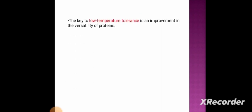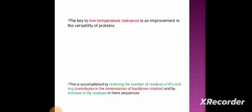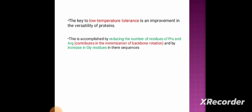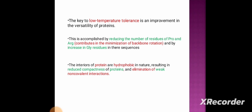The key to low temperature tolerance is an improvement in the versatility of proteins. This is accomplished by the reduction in the number of residues of proline and arginine, which contributes to the minimization of backbone rotation, and also by the increase in glycine residues in their sequences. The interior of the proteins is hydrophobic in nature, which results in the reduction of compactness and the elimination of weak non-covalent interactions.